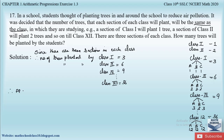So the AP is: in the first class there are 3 trees planted, the second class has 6 trees, third class has 9 trees, and so on, in the 12th class there will be 36 trees planted. Since there are 12 classes, n is equal to 12.